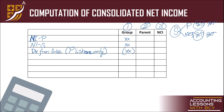Next: add or minus — amortization of purchase differentials. Pwedeng add yan, pwedeng minus. Depende sa case. Nanggagaling ito doon sa fair value adjustments na ginagawa natin nung kinocompute natin yung result ng business combination — like undervalued assets, undervalued liabilities, etc. Yung ipang-a-adjust mo doon ay ia-amortize dito. Sa problem, makikita nyo kung paano yung proseso.